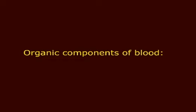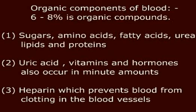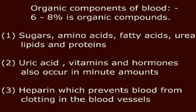Organic Components of Blood. About 6 to 8% of blood plasma consists of organic compounds, including sugars, amino acids, fatty acids, urea, lipids and proteins. Uric acid, vitamins and hormones also occur in minute amounts.